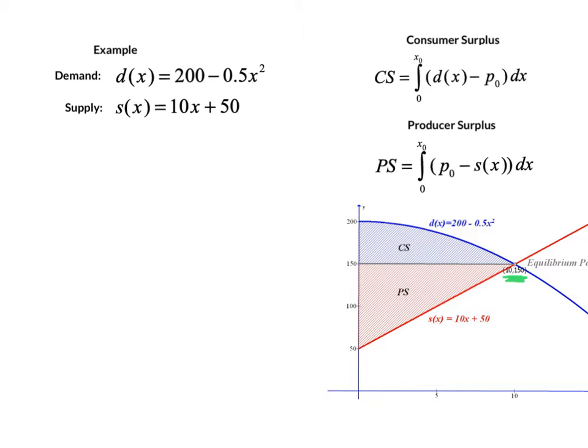In this example we have a demand function modeled as the quadratic d(x) = 200 - 0.5x² as our blue graph. And then we have the supply function. Supply is an increasing function because as price increases then the amount supplied would increase as well. So s(x) here is 10x + 50.